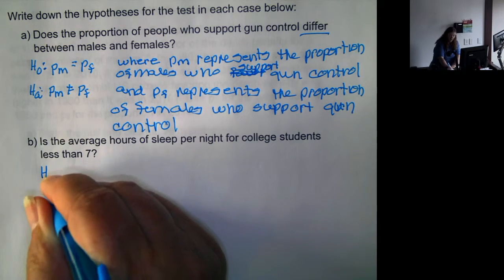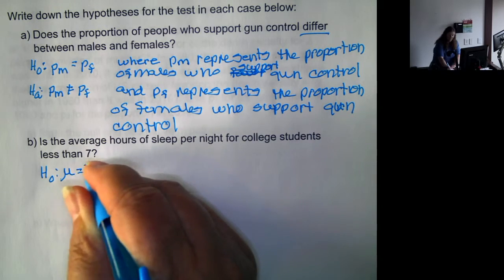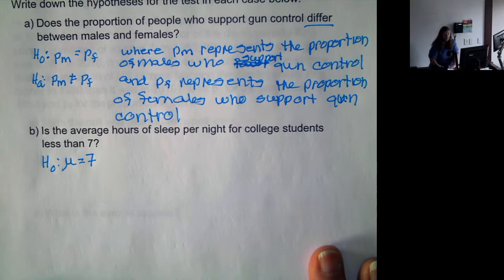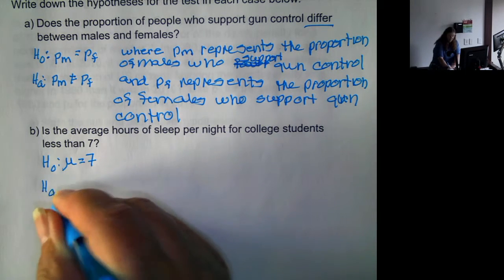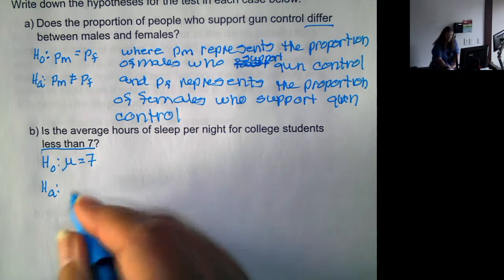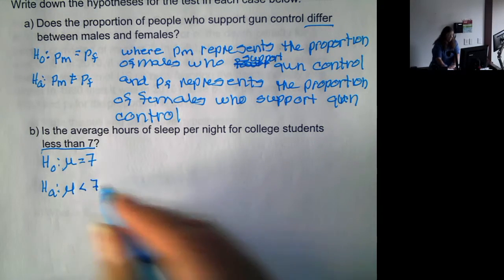And we're comparing it to a specific number. So the null hypothesis will be that the mean equals seven, again because null hypothesis always has the equal sign. The alternative, in this case we are given a direction, and the direction is less than.